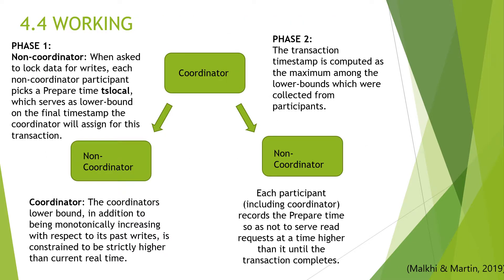By using data versioning, Spanner provides timestamps for each transaction so that each transaction can be differentiated from others. There are two main rules on how to choose timestamps: the core idea is that whichever transaction completes last should get a higher timestamp. Now, the working of Spanner's concurrency control consists of two phases. In phase 1, when the coordinator asks to log data for writes, each non-coordinator picks a prepared timestamp (PS local). In phase 2, by considering all lower bounds, a timestamp is associated with each transaction. Upon commit, each participant removes the prepared timestamp and removes the read restrictions associated with it.